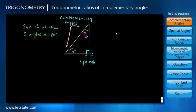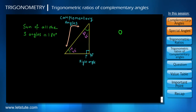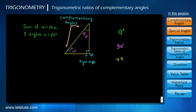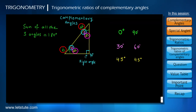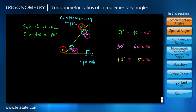In trigonometry, we have some special angles: 0 degrees, 30, 45, 60, and 90 degrees. These pairs of angles are called complementary angles.